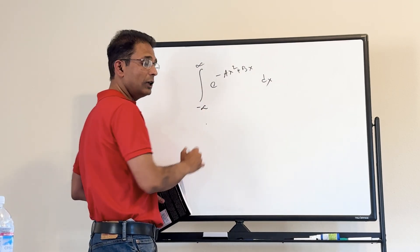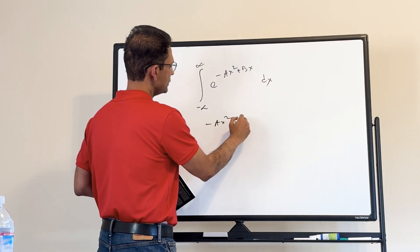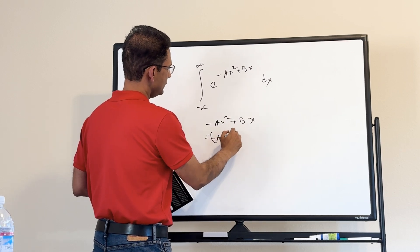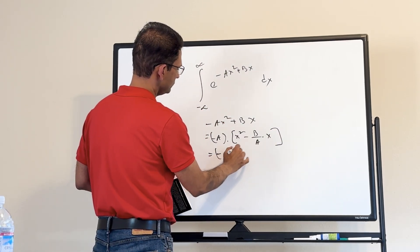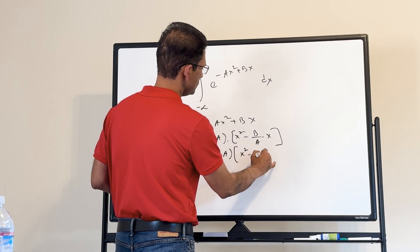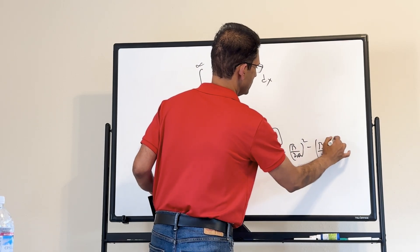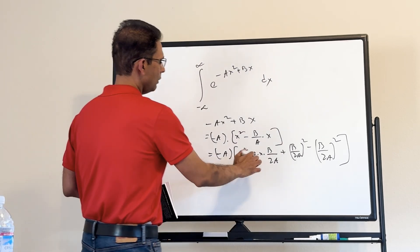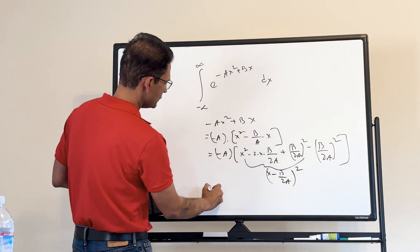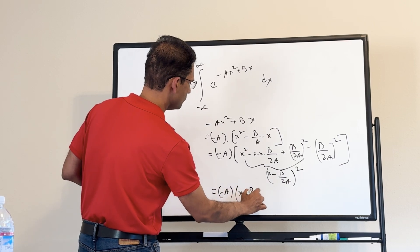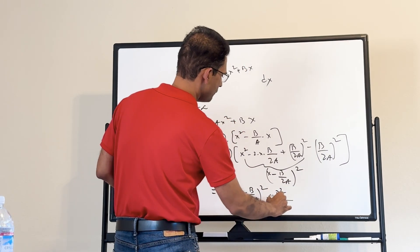The technique is the same: complete the square for the argument of the exponential. We write minus a times (x squared minus b/a times x), then add and subtract (b/2a) squared, giving x minus b/2a, all squared. The full expression simplifies to minus a times (x minus b/2a) squared minus b squared over 4a.